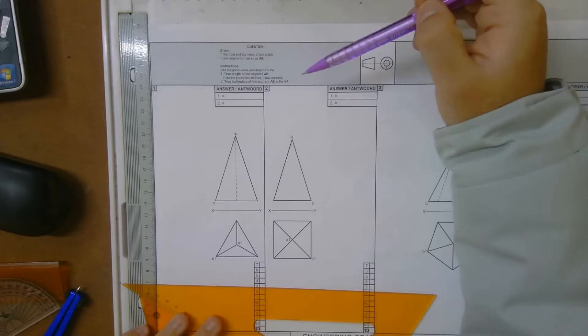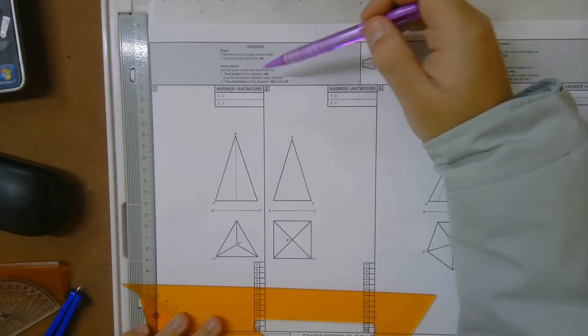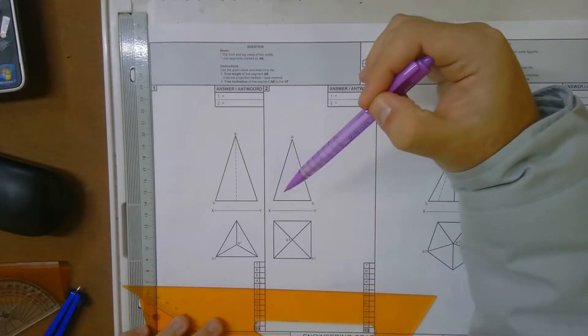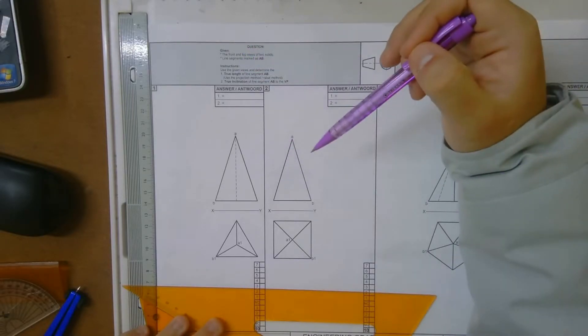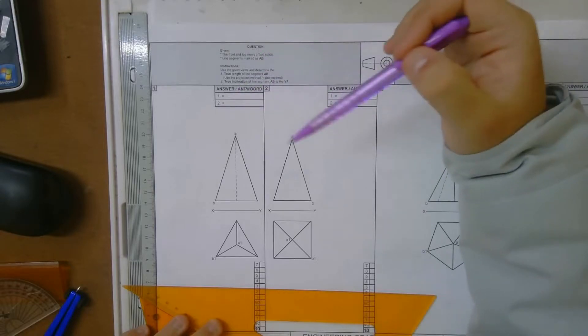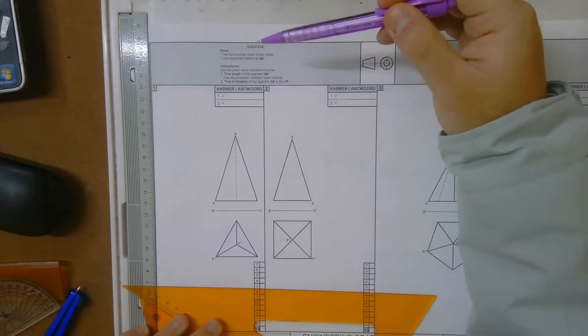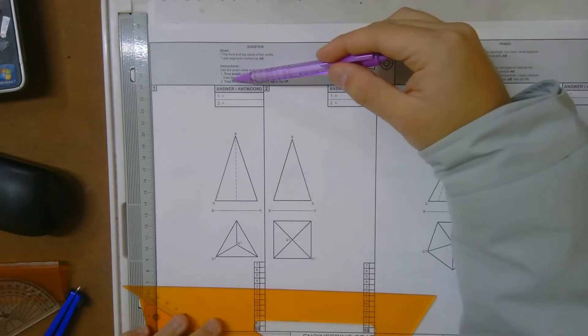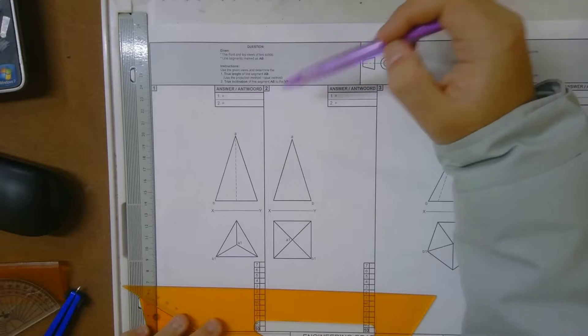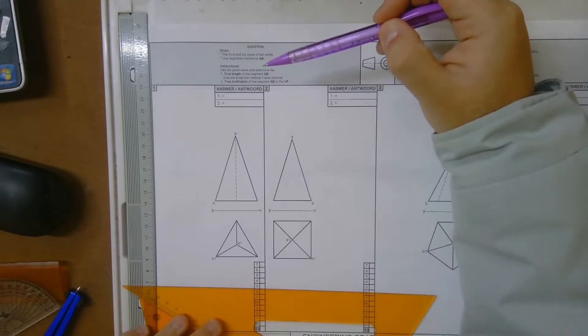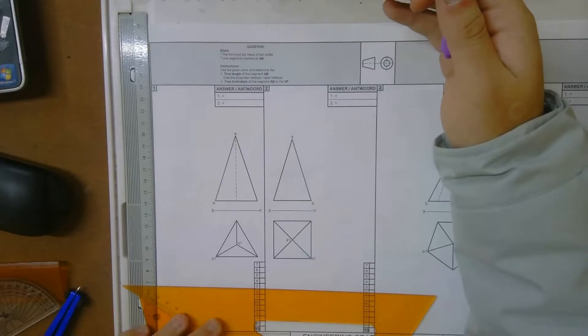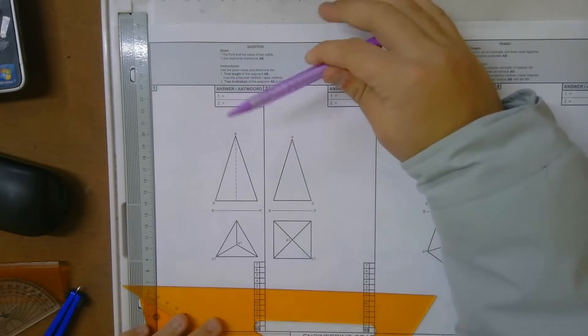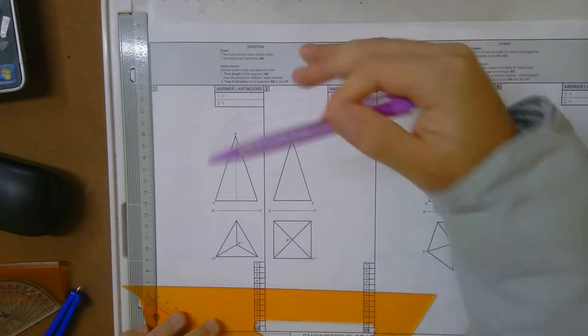Now what you've got to do is use the given views and determine the true length of line segment AB and true inclination of line segment AB. If I say true length, that means I'm writing it in millimeters - I'm measuring what the true length would measure in millimeters. True inclination means I'm looking for degrees - the angle that that specific line is at, the true angle.